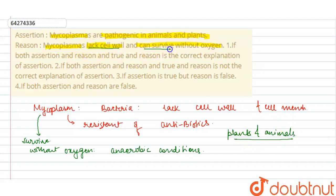But reason is not the correct explanation for the assertion. Hence our answer is: if both assertion and reason are true, but reason is not the correct explanation of the assertion. So our answer is option 2.